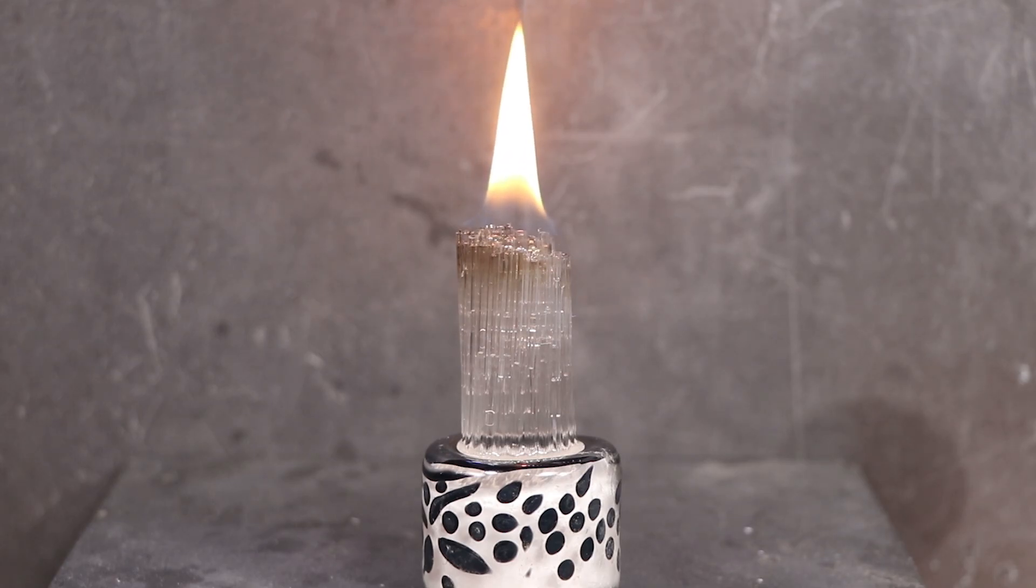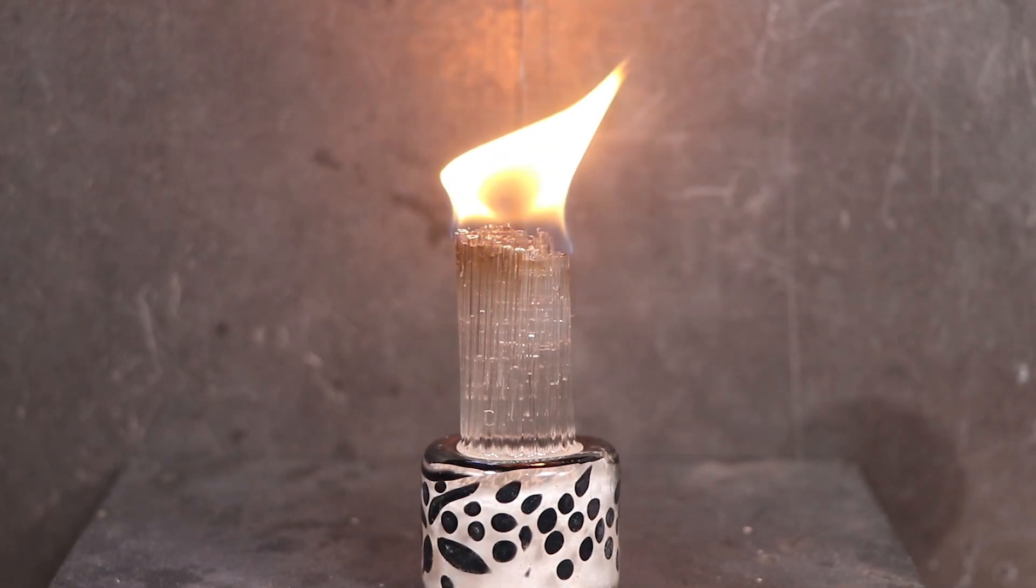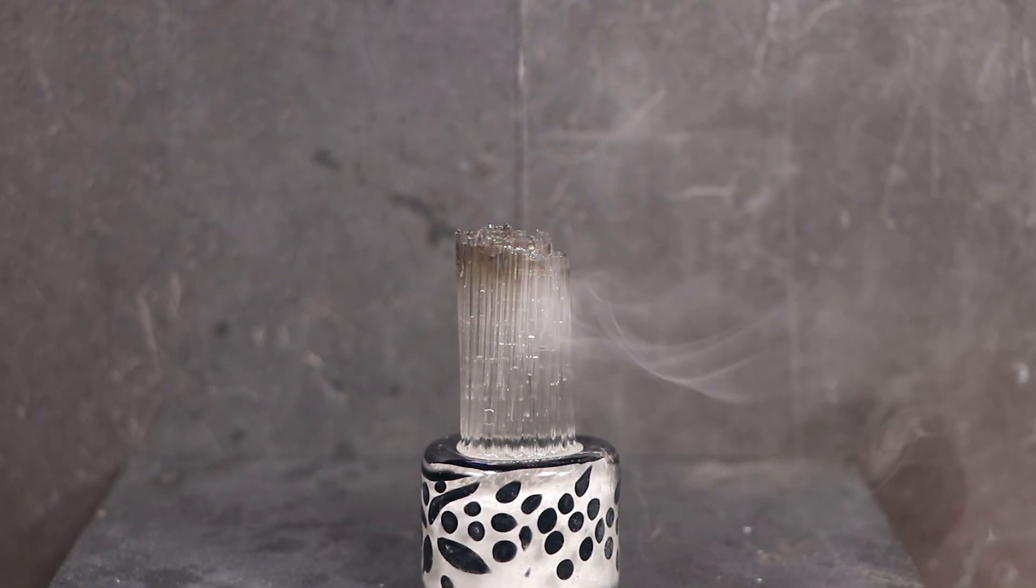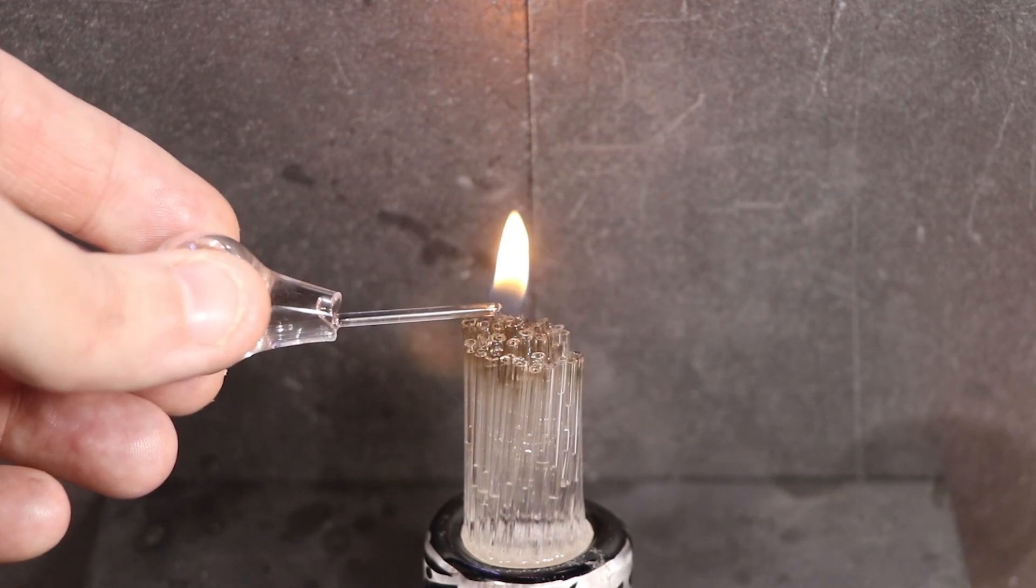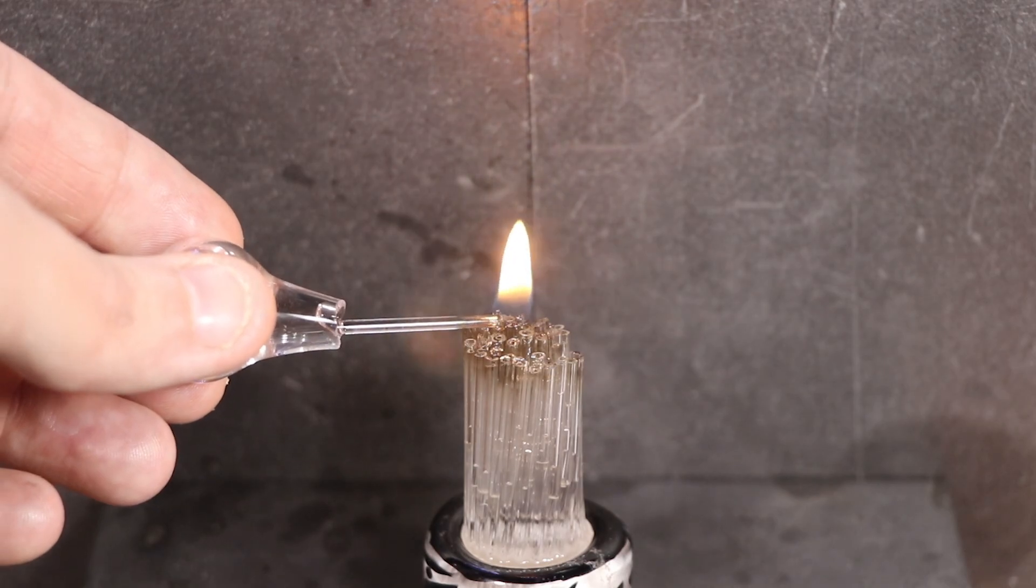However, there's very little blue and a lot of yellow. Which means it's not combusting completely. There's too much fuel and not enough oxygen. I'm going to theorize that it's so tightly packed that it can't pull any oxygen from below, but from outside the cluster.